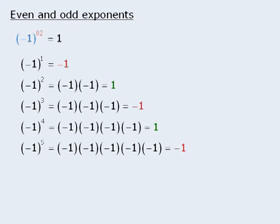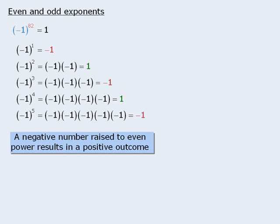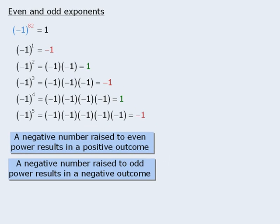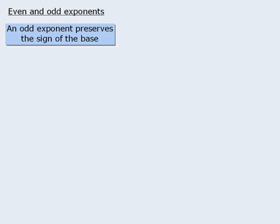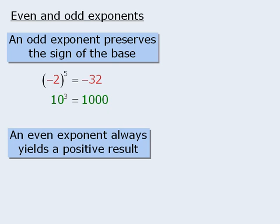To generalize: a negative number raised to an even power will yield a positive number, and a negative number raised to an odd power will yield a negative number. Odd exponents preserve the sign of the base — for example, negative 2 to the power of 5 equals negative 32, and 10 to the power of 3 equals 1000. In both cases the exponents are odd, and the sign of the base is preserved in the result.